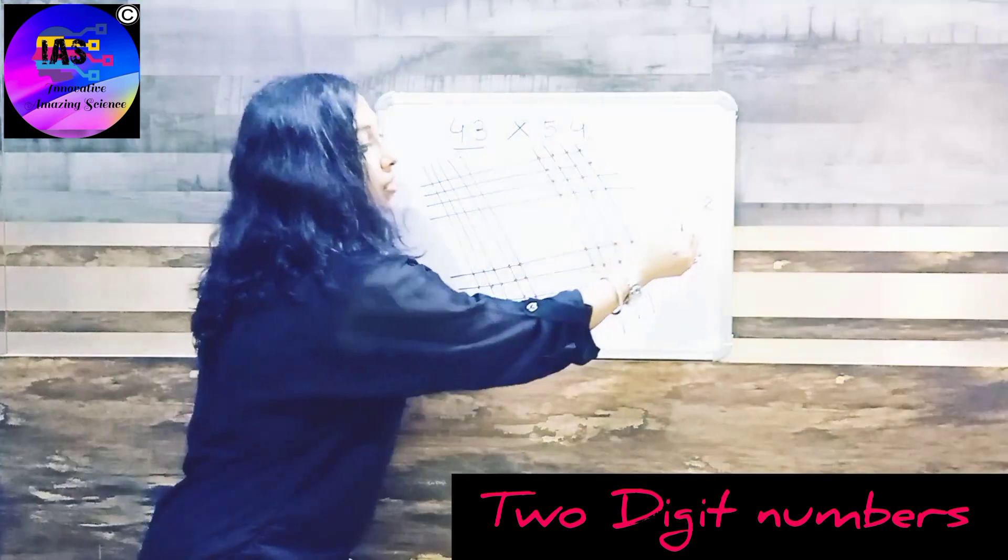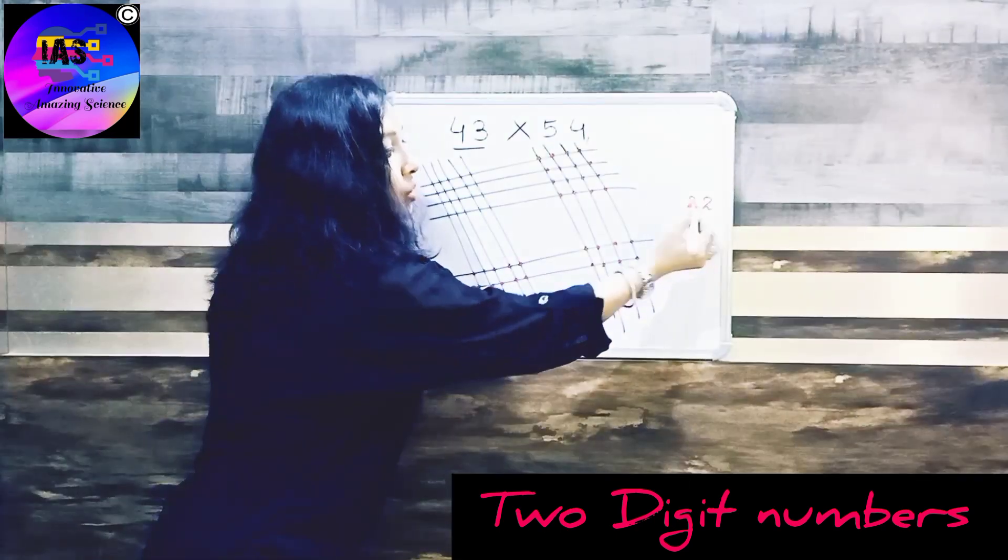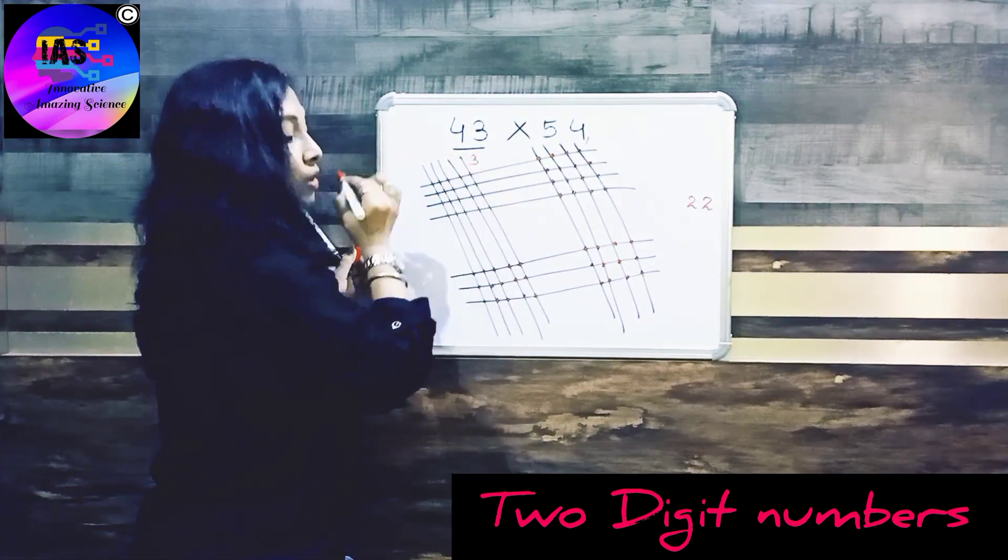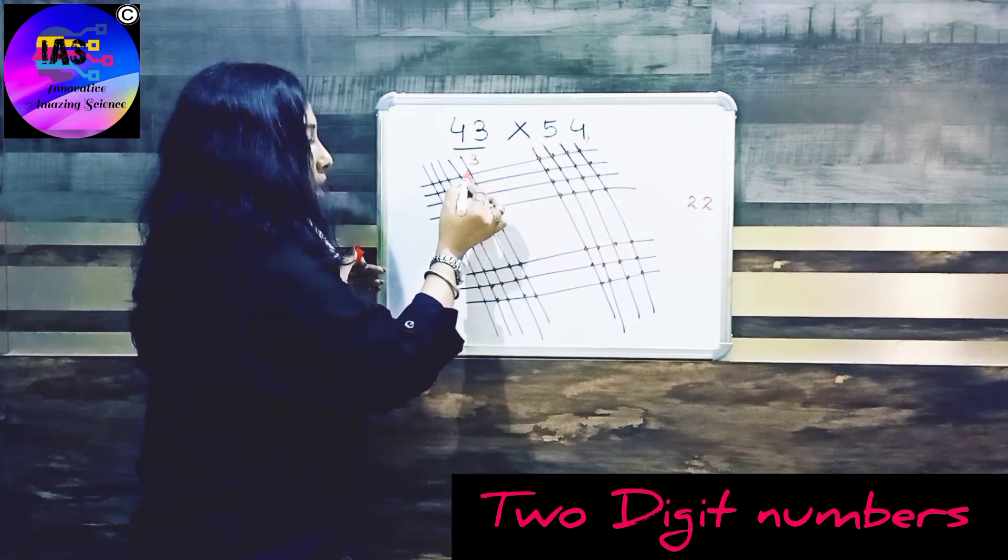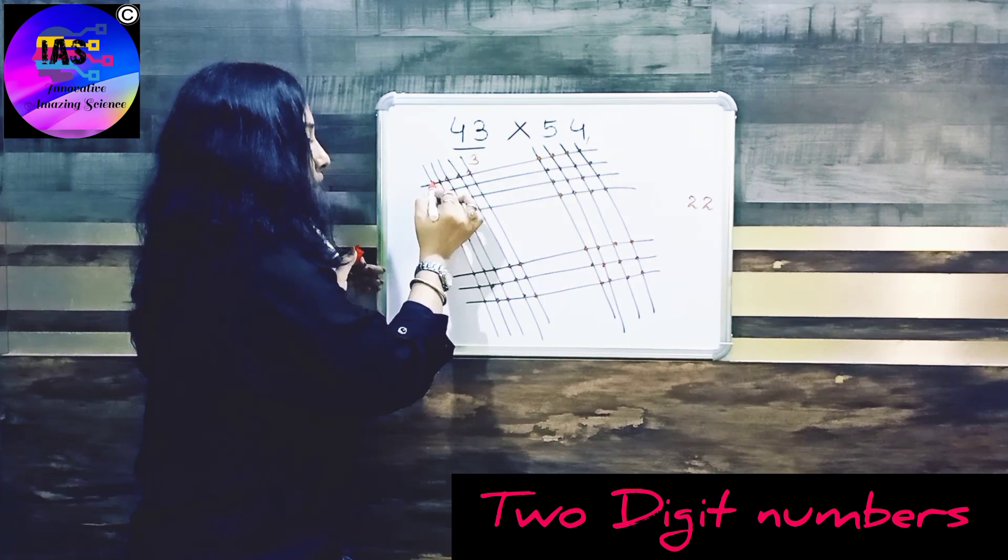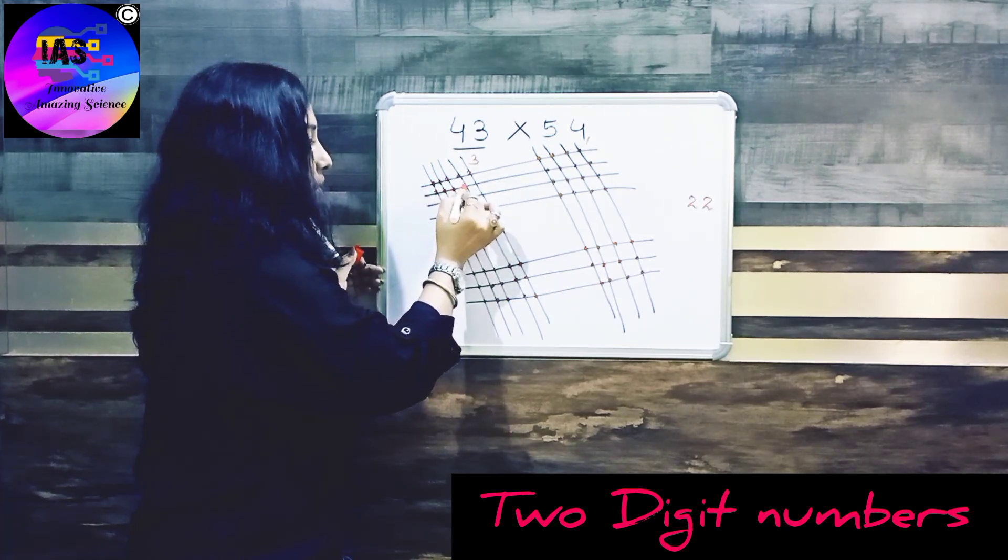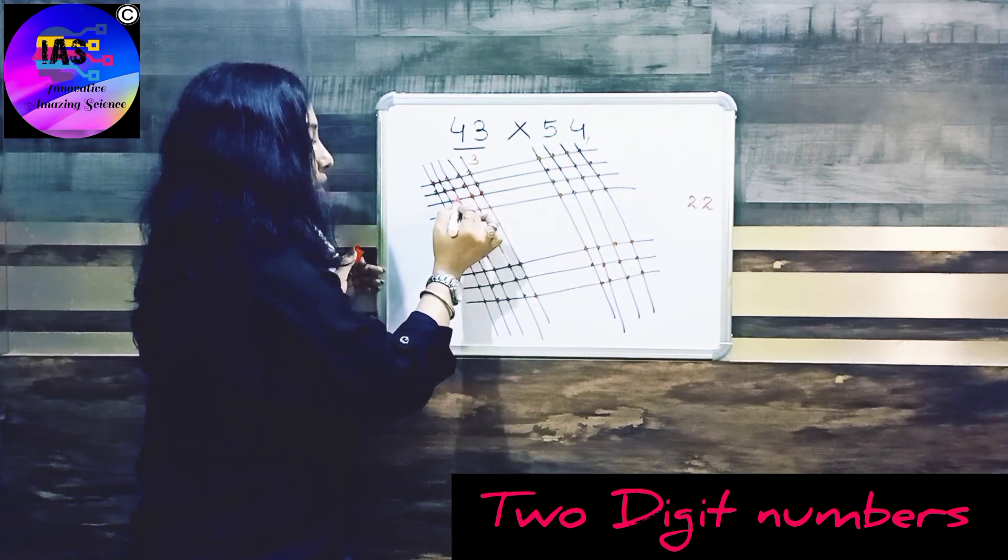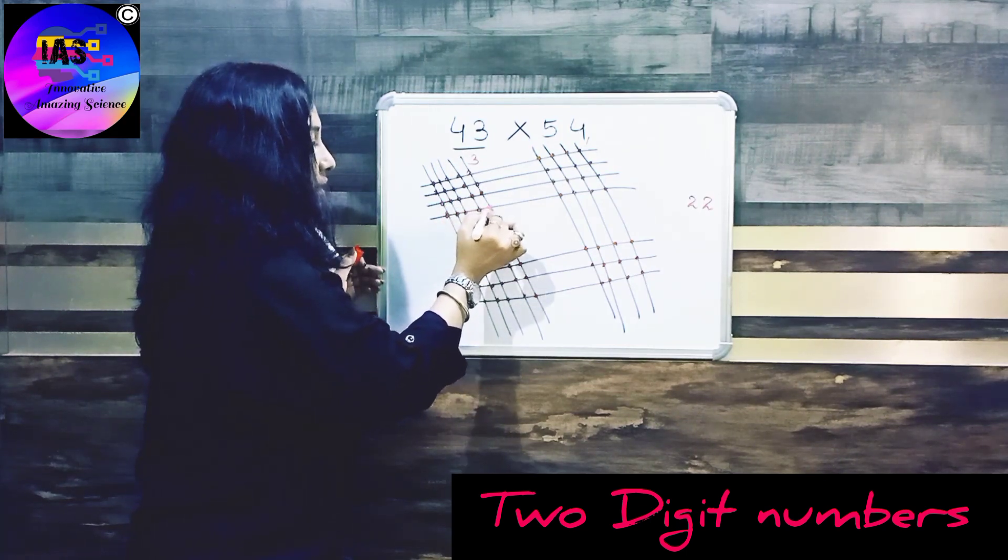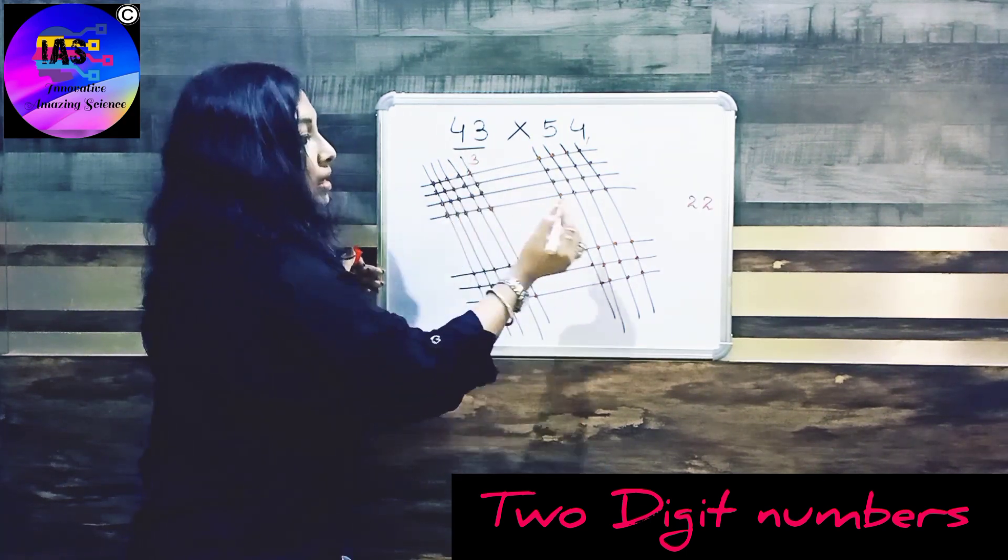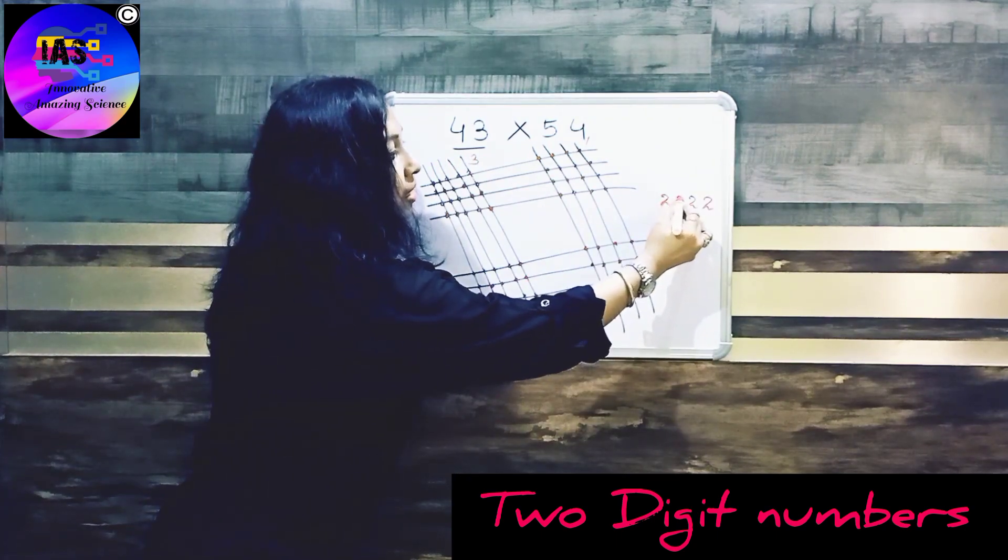This plus 1, it becomes 32. So we will write 2, and here we'll carry 3. So we have to count this last segment: one, two, three... nineteen, twenty, plus 3 is 23.